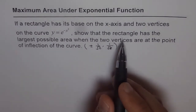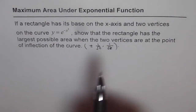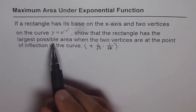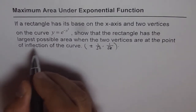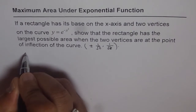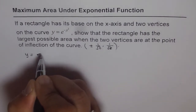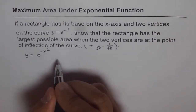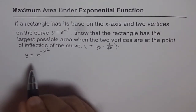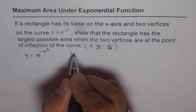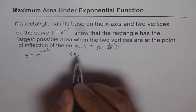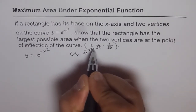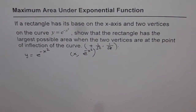Now let's solve this question. To find the maximum area, we need to find the first derivative and then test for maximum or minimum after we get the critical point. We have our function y equals e to the power of minus x squared. If we assume a point x on this function, then the y value is going to be e to the power of minus x squared.